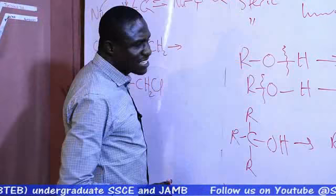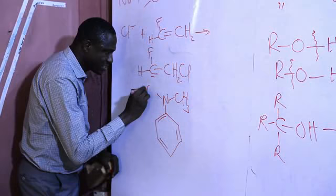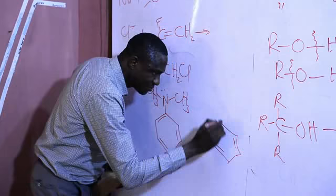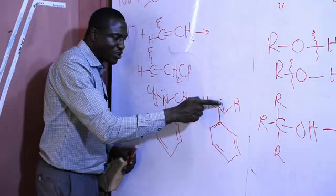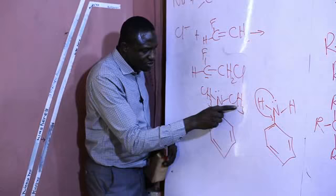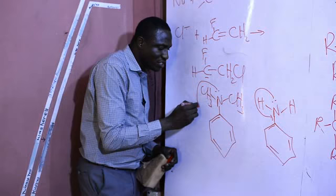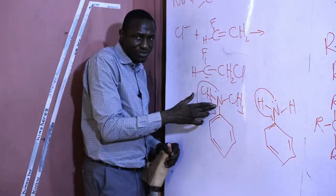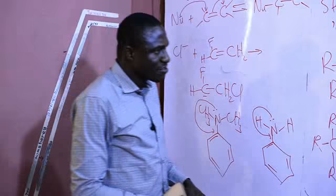For steric hindrance, consider this molecule: N,N-dimethylaniline, which has two CH₃ groups attached to the nitrogen, compared to aniline itself. In aniline, the lone pair of electrons on the nitrogen atom can easily be delocalized within the benzene ring to form various canonical structures through resonance. But in N,N-dimethylaniline, the two methyl groups attached to the nitrogen make it difficult for the electron pair to be delocalized within the ring. We say the bulkiness of the nitrogen's substituents reduces the delocalization of the electrons — this is steric hindrance.